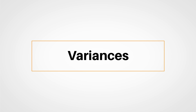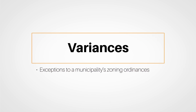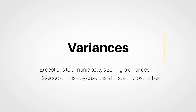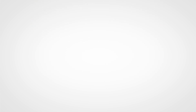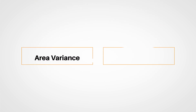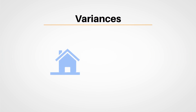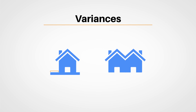One of these types of tools are variances. Groups or individuals request variances for exceptions to a municipality's zoning ordinances. They're decided case by case and apply to that specific property. The two main types are area and use variances. An area variance might be a homeowner requesting permission to build a structure closer than normally permitted to a street. A use variance might be something like a property owner requesting to change a single-family home to a multifamily residence.